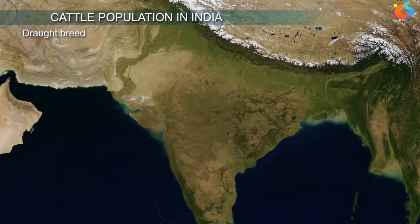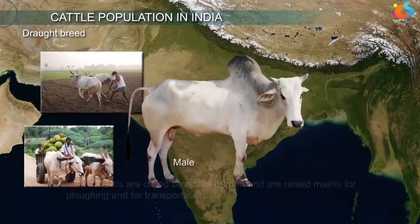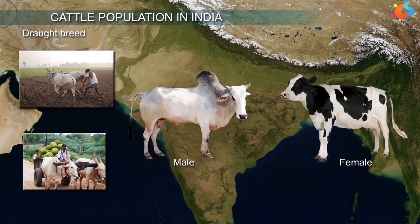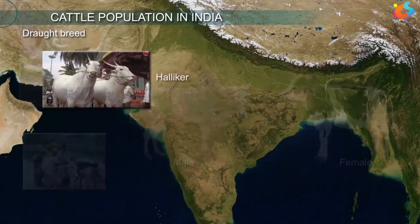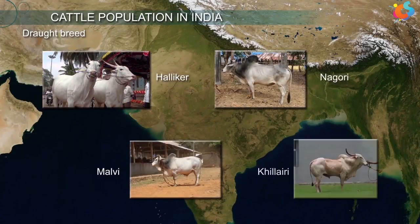Draught breeds are called beasts of burden and are raised mainly for plowing and transportation. The males are strong, while the females have small udders and produce very little milk. Examples include Hallikar, Nagori, Malvi, Kankrej, etc.